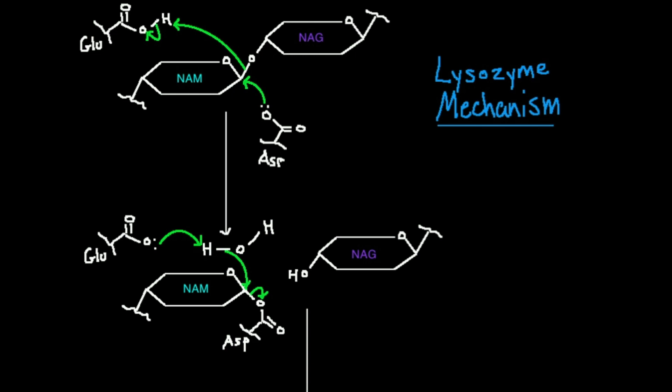So what you should see in that part of the polymer are repeating units NAM, NAG, NAM, NAG, and so on and so forth. And actually, this enzyme lysozyme, its net reaction, as we're going to see, is to split all the bonds between repeating units of NAM and NAG.